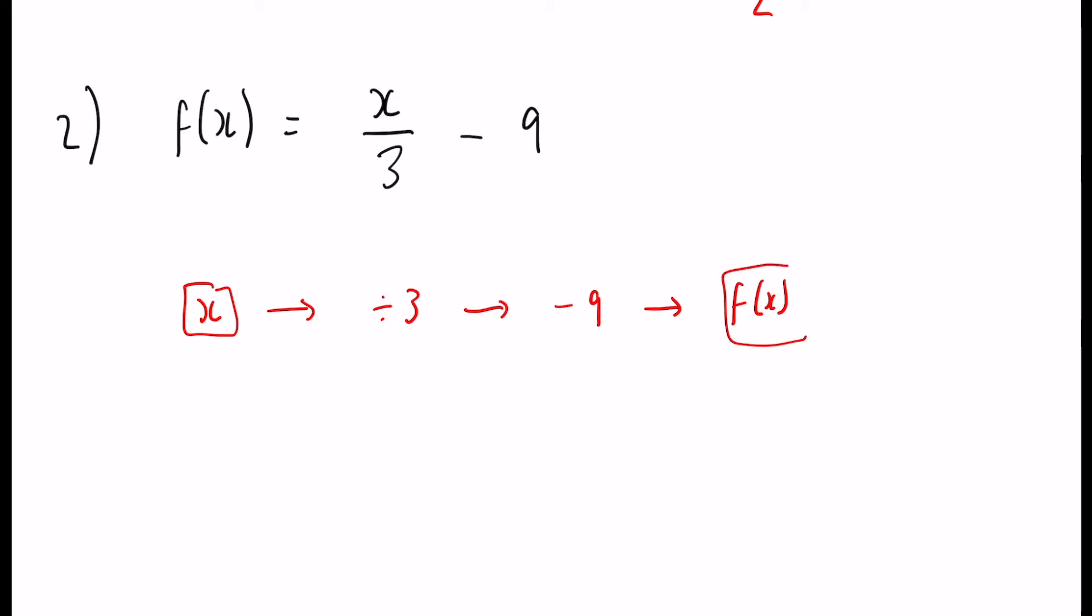Now in reverse, we would start with our x, we add 9, we multiply by 3, and that leaves us with our f to the minus 1 of x.